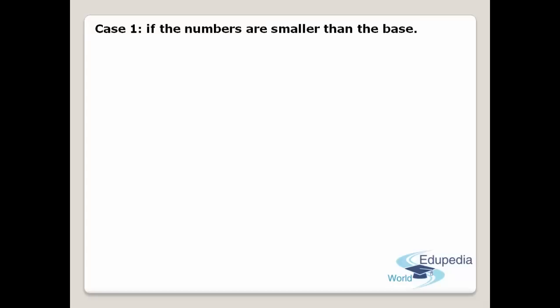Case 1 means the multiplicand and multiplier are both smaller than the base. For example, I am taking two single digits: 7 and 8. You know that 7 times 8 equals 56. Now let us see the procedure to get the product 56. Before starting the multiplication, find the base for these two digits. The base is 10, because 10 is the nearest base number to both 7 and 8.